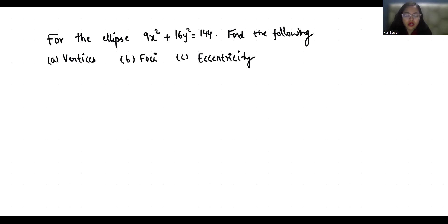First, to find the vertices of the ellipse, we are going to express this equation in standard form by dividing both sides by 144. It becomes x²/16 + y²/9 = 1.